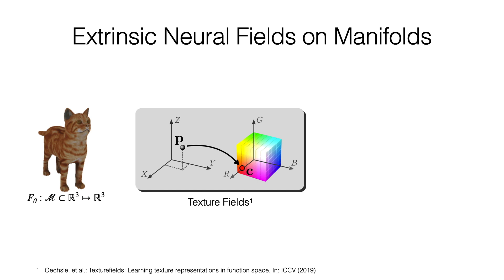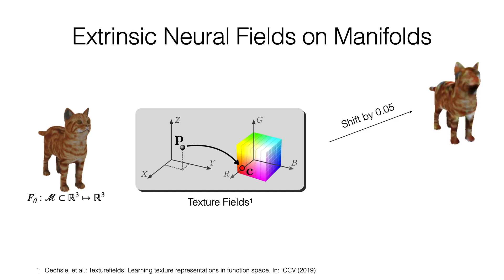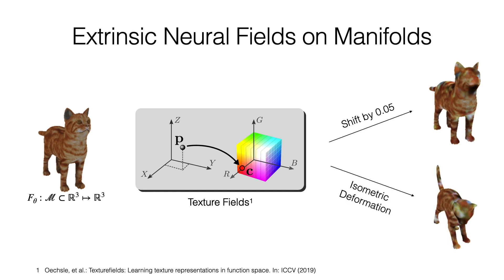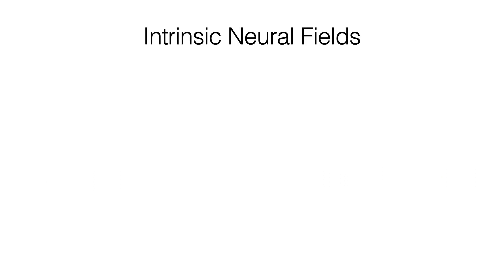However, this representation has severe limitations. For example, if the shape is shifted just slightly in the embedding space, the MLP is evaluated at different points and the texture is severely distorted. While the position and orientation of the shape can be normalized, such canonicalization is much harder for general isometric deformations. These problems are well known in geometry processing and are generally a consequence of using an extrinsic parametrization.